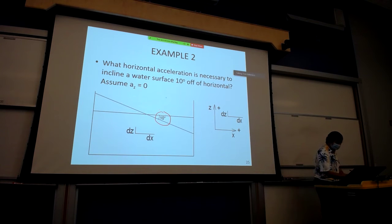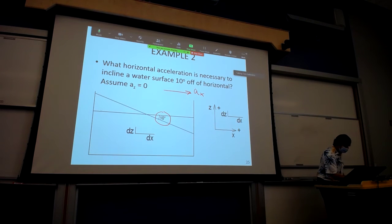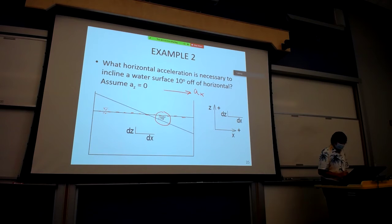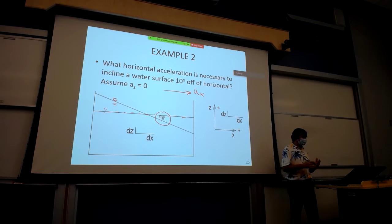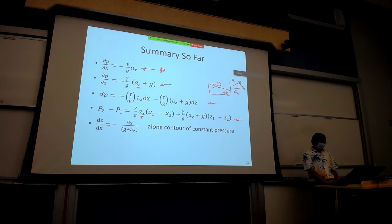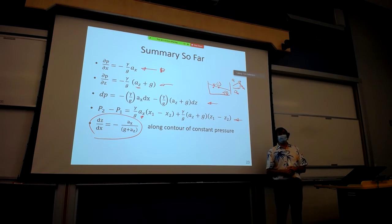In this case we're trying to figure out what acceleration AX is necessary to create this system. The original system has a horizontal water surface. The new system is this sloped fluid surface. All we have to do is find the horizontal acceleration which gives us an inclination of ten degrees. That ten degrees is dz/dx — it's the tangent of that angle.